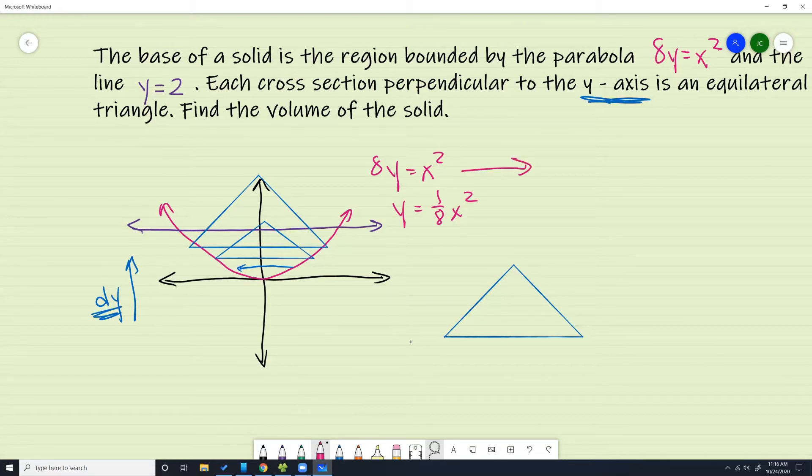If you need to do that, then the pink curve in terms of y—we need to get x by itself. So that's going to be plus minus square root 8y equals x. I just took the square root on both sides. That means this part right here is positive square root 8y, and this side right here is negative square root 8y.